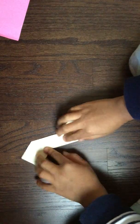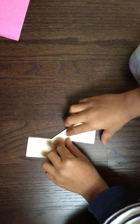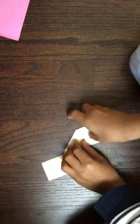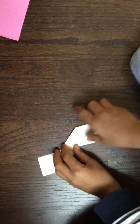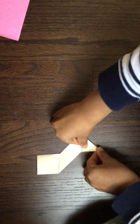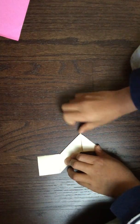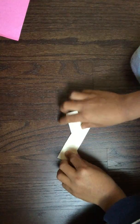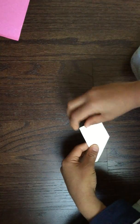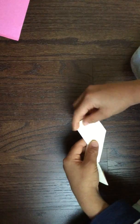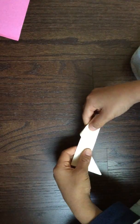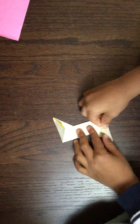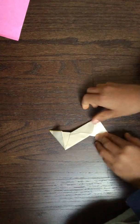And then flip over and put this side to this side. And then fold this side, and then flip over, and then you'll see one triangle. And then when you do the other one this way, you should have two triangles.